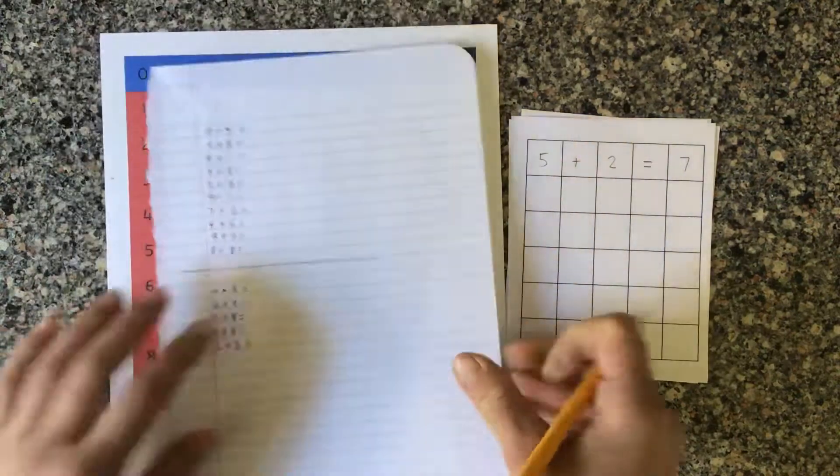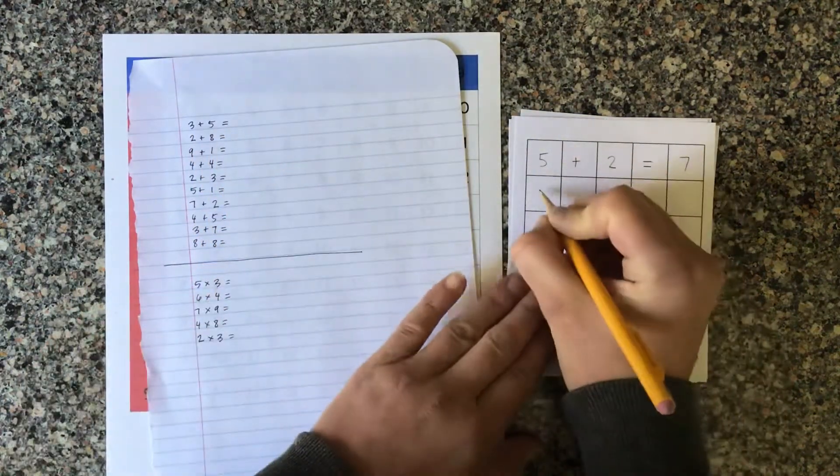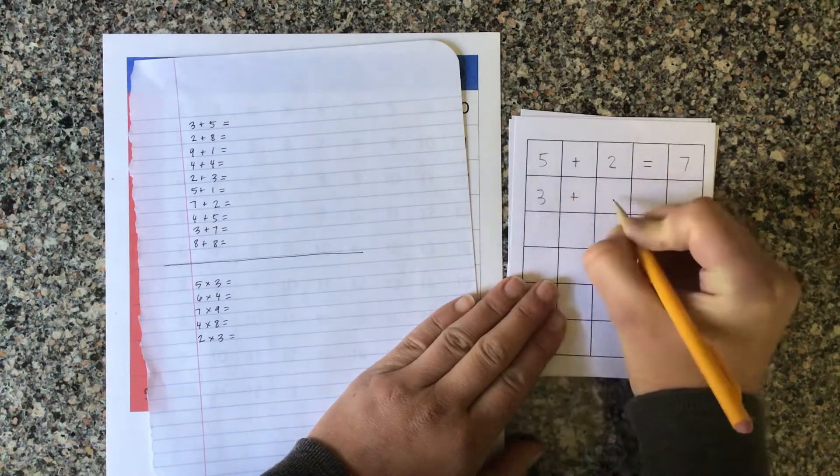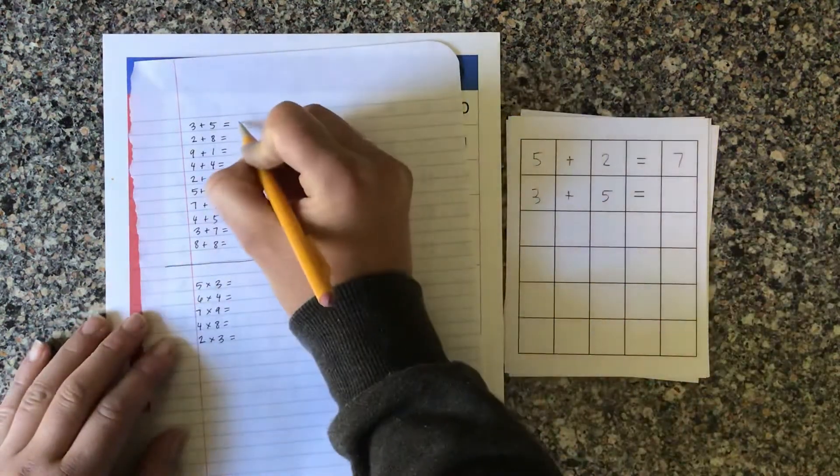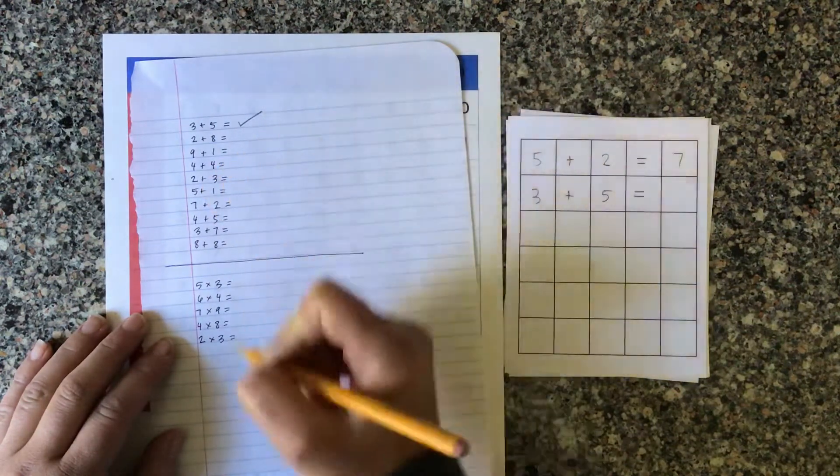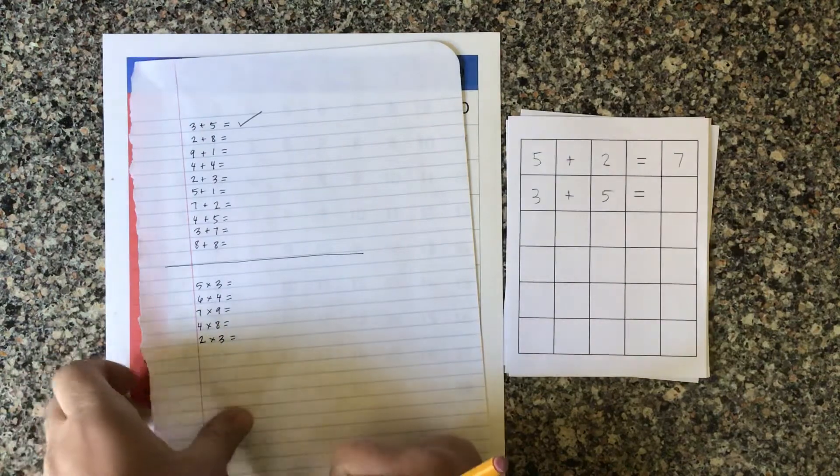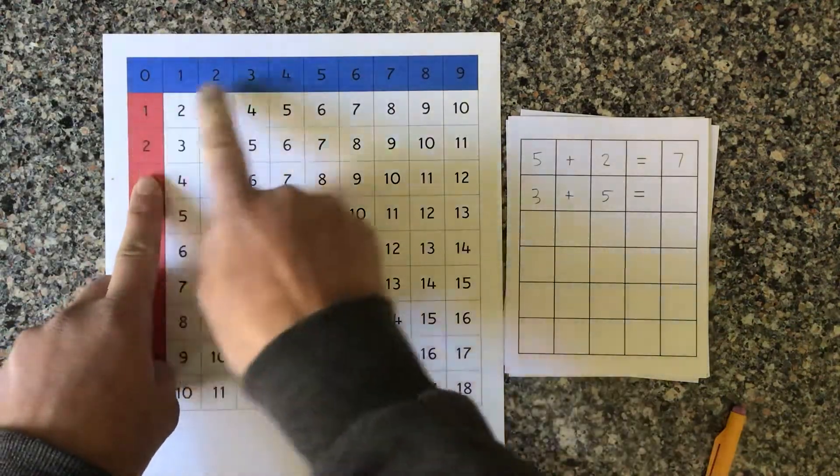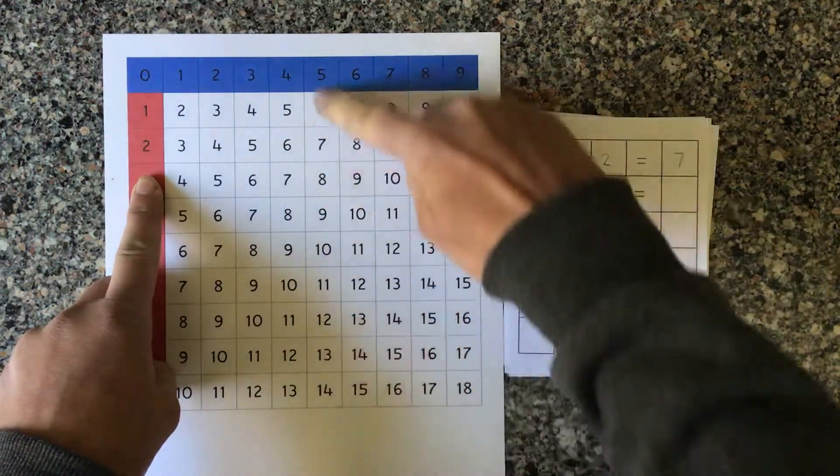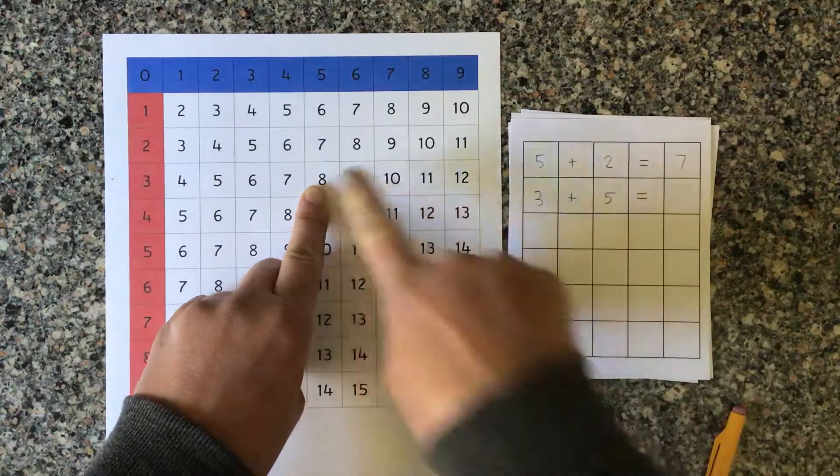Okay, let's see. 3 plus 5 equals. I'd go ahead and make a check mark or cross it out to show that one's done. 3 plus 5. This one goes up and down, this one goes side to side. Equals 8.